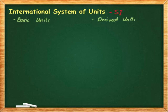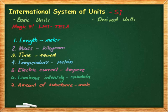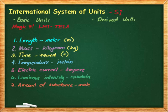In basic units we have what we call the Magic Seven. The mnemonic is LMT-TALA. L is for length, which has a unit of meter, abbreviated as m. M is for mass, which has a unit of kilogram, abbreviated as kg. T is for time, which is the second. For temperature, the unit is kelvin — since it is named after Lord Kelvin, it uses a capital letter K.